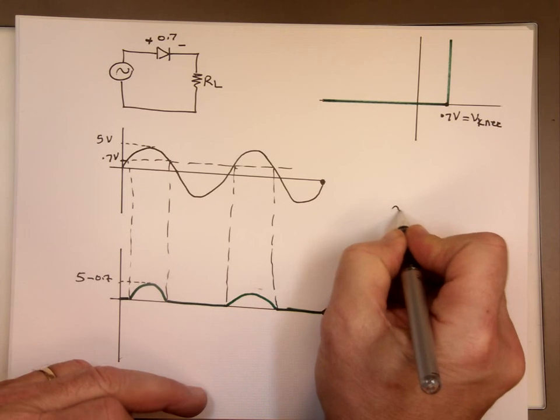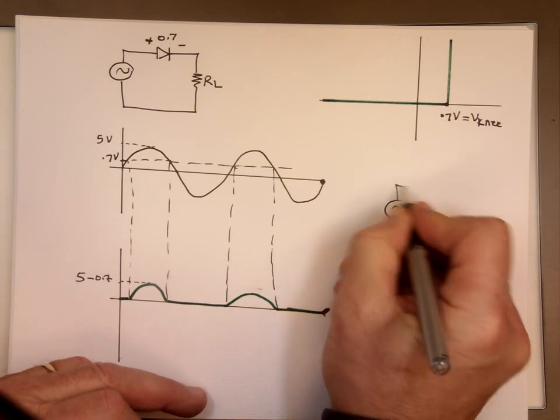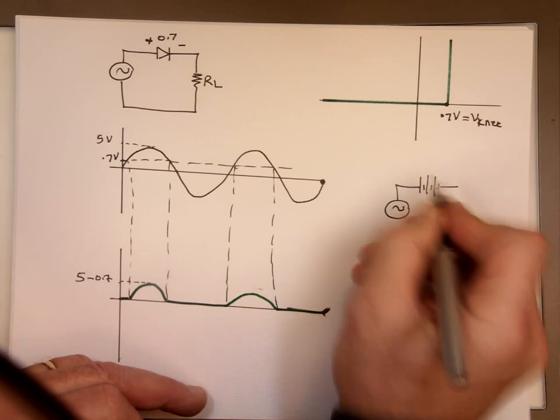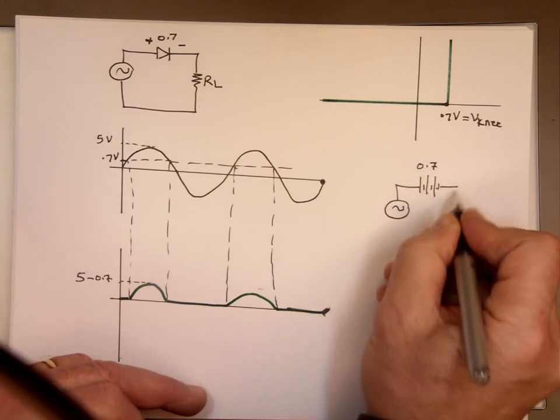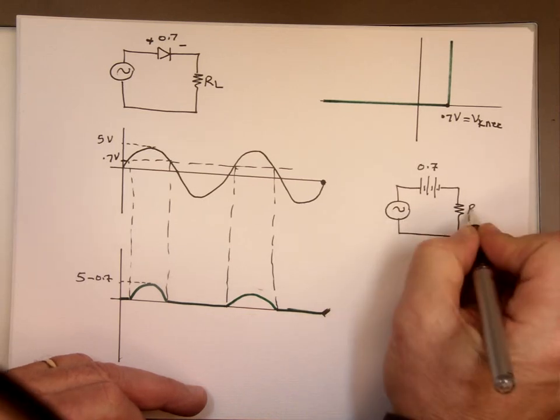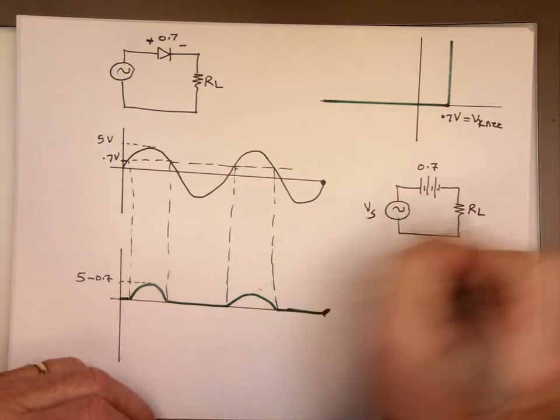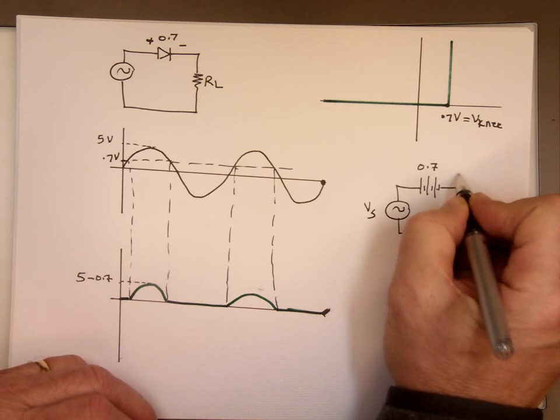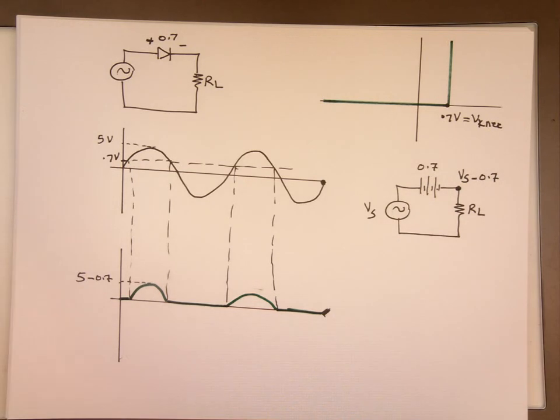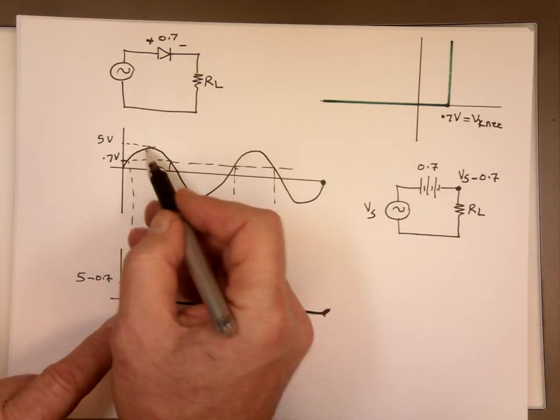And a voltage source here, 0.7. So if this is Vs, then this voltage here will have to be Vs minus the 0.7, the difference between them. So that's why you can see each one of these values here dropped by 0.7.